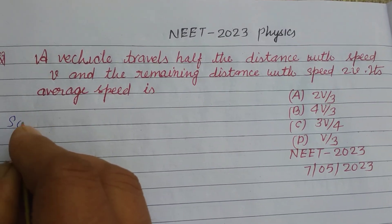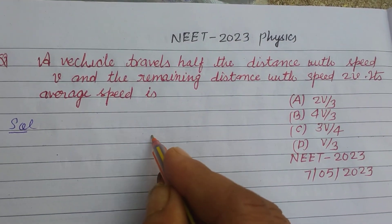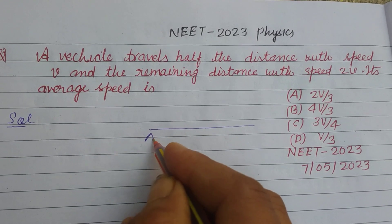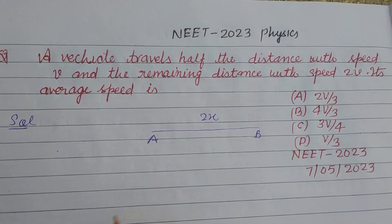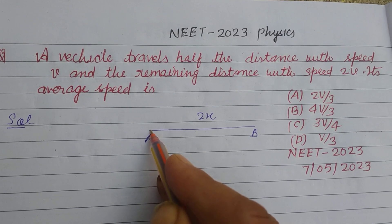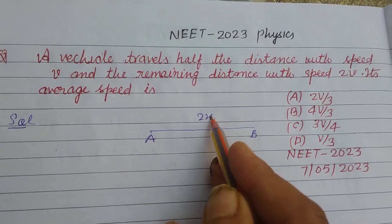So students, let the distance covered by the vehicle be 2x. Vehicle goes from A to B, its distance is 2x.